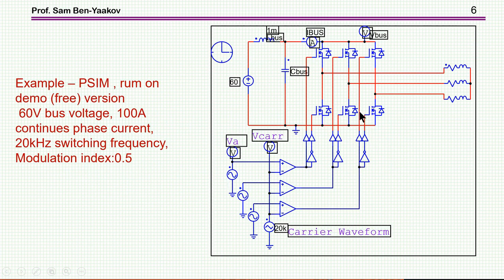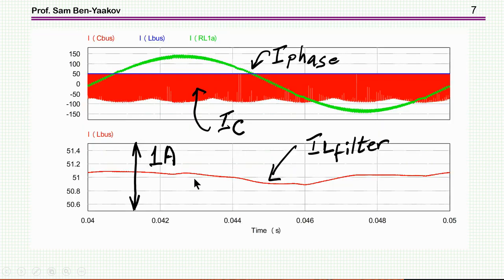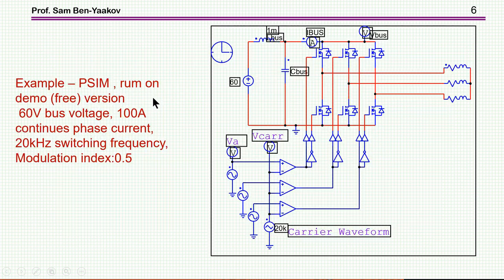Here is a simple example implemented in SPICE: a case of 60-volt bus voltage, 100-amp continuous phase current, and 20-kilohertz switching frequency with a modulation index of 0.5. These are the simulation conditions. Here are some results — we see the phase current and the bus current with no DC component, because I've placed a filter here with a fairly high inductance of one millihenry.